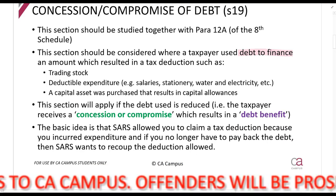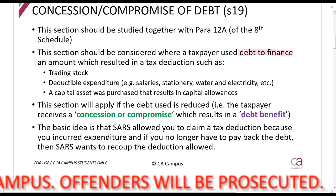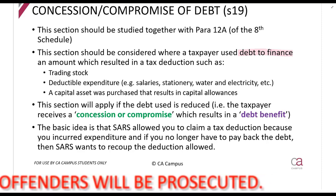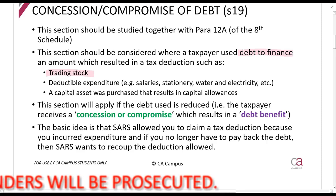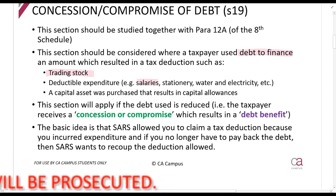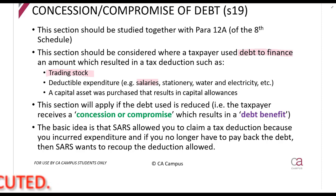So I incur a debt and then I can claim a deduction. For example, I take out a loan from the bank to buy trading stock, so I claim a trading stock deduction. Or I take out a loan to pay salaries, so I claim a salaries deduction. Or I take out a loan to buy a capital asset and then I can claim capital allowances. The key idea is: I got a loan for something, and that something I purchased using money I owe to someone else — I can claim a deduction for. This section applies when that debt is then written off.